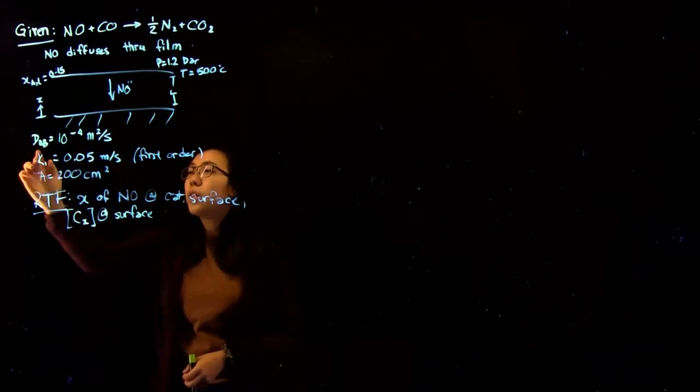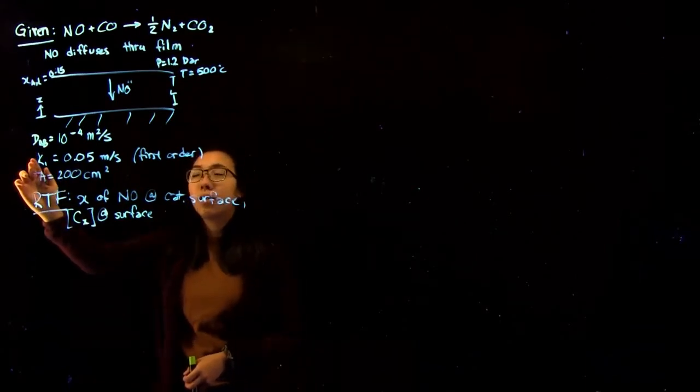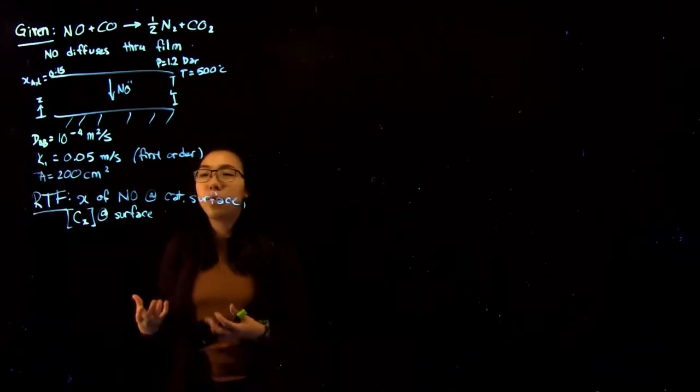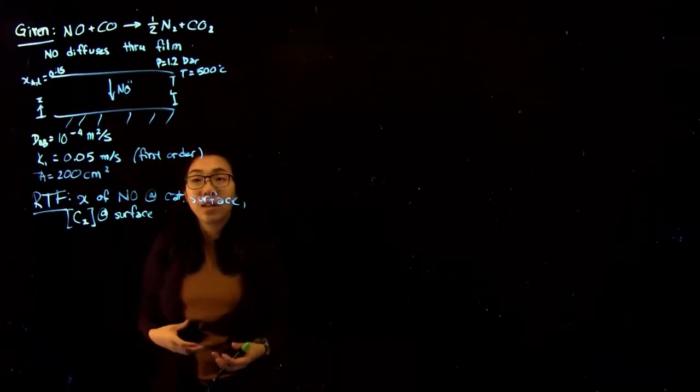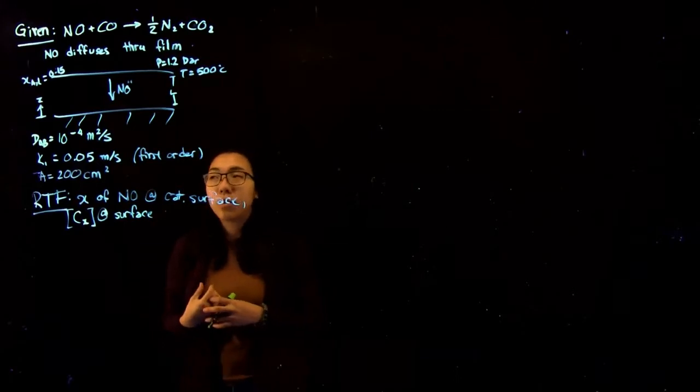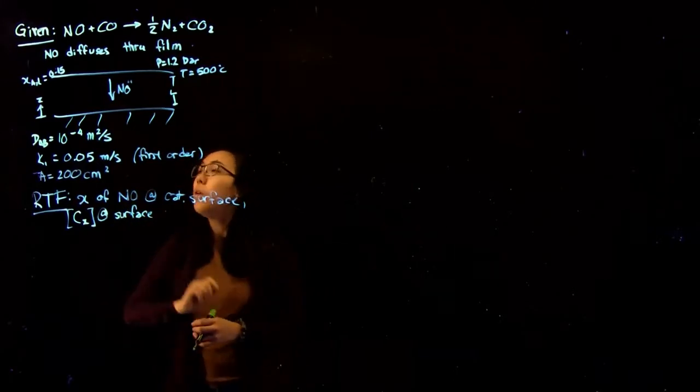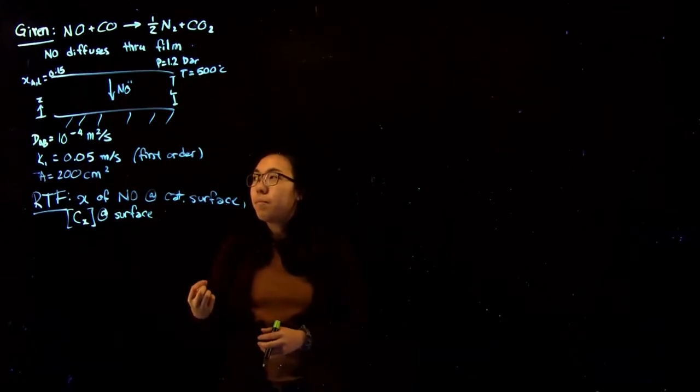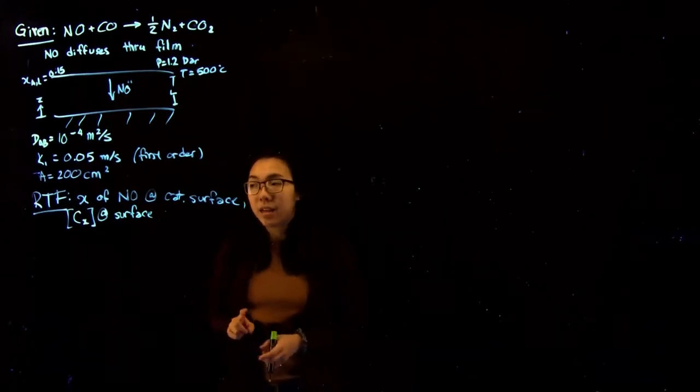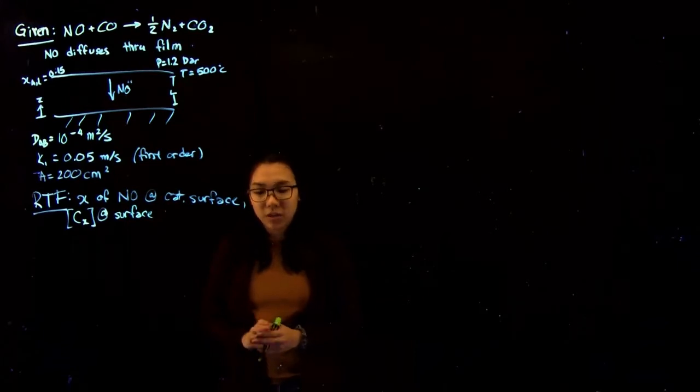We're given the diffusion coefficient and the constant for the reaction, because we know that the reaction is first-order. So the reaction rate is equal to K times the concentration of NO. We're given the area. So what we want to find is the mole fraction of NO at the catalytic surface and the concentration at the surface.